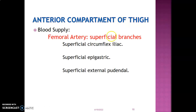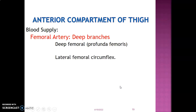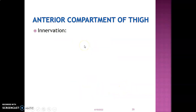The blood supply to the anterior compartment of the thigh is mainly from superficial branches of the femoral artery: superficial circumflex iliac, superficial epigastric, superficial external pudendal, deep external pudendal, and descending genicular. You may be asked to list all branches of the femoral artery. The deep branches are: profunda femoris, and medial and lateral circumflex femoral arteries. Profunda femoris has perforating arteries — usually three or four including the terminal deep femoral branch.